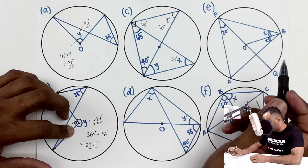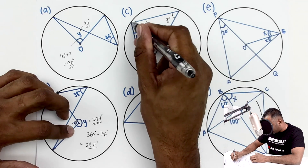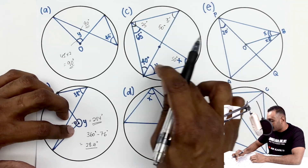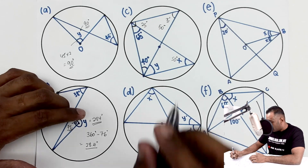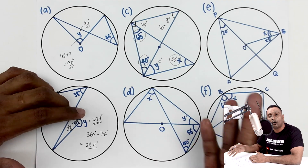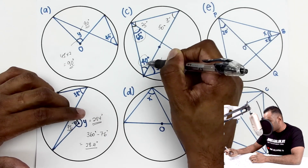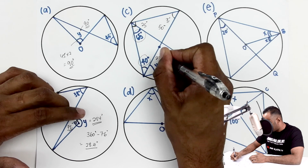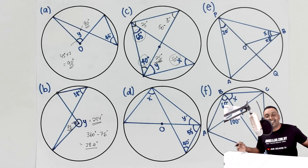Now to find Y in question C. We have a triangle, and the total angles in a triangle must be 180 degrees. We already know the three values: 65, 40, and 50. So 65 + 40 + 50 = 155, therefore Y = 180 − 155 = 25 degrees. That's the value of Y.